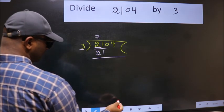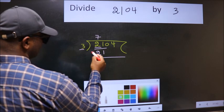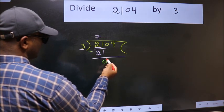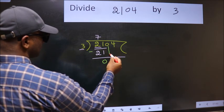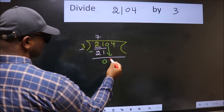Now, we should subtract. We get 0. After this, bring down the beside number. So, 0 down.